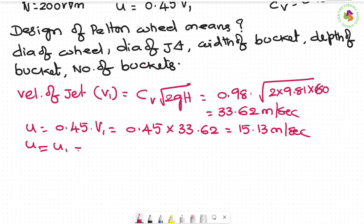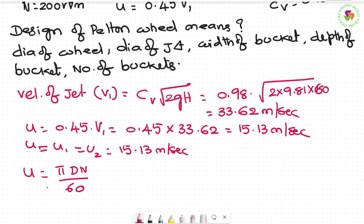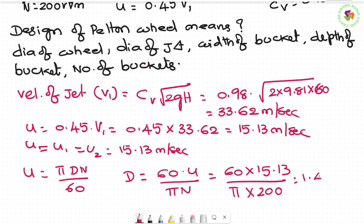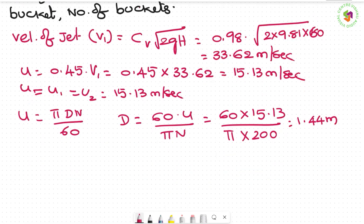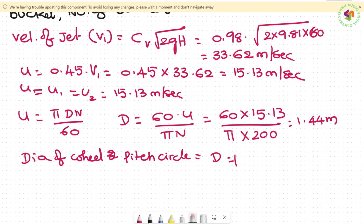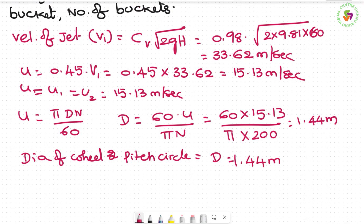Since u = πDn/60, therefore D = 60u/(πn) = 60 × 15.13 / (π × 200) = 1.44 meters. So the diameter of the wheel (pitch circle diameter) D = 1.44 meters.